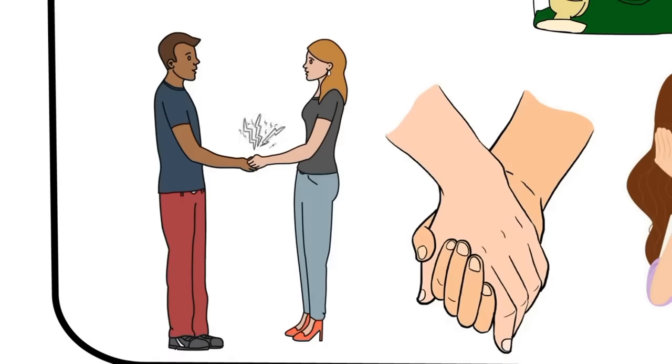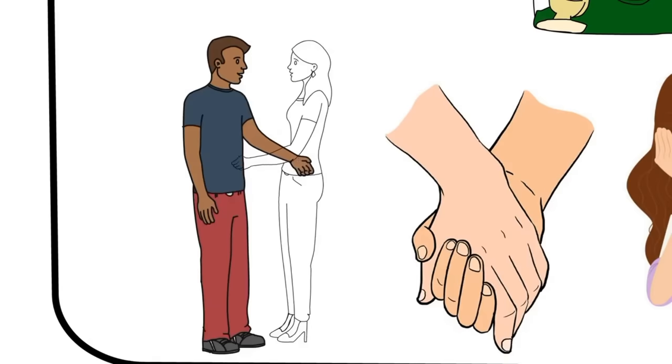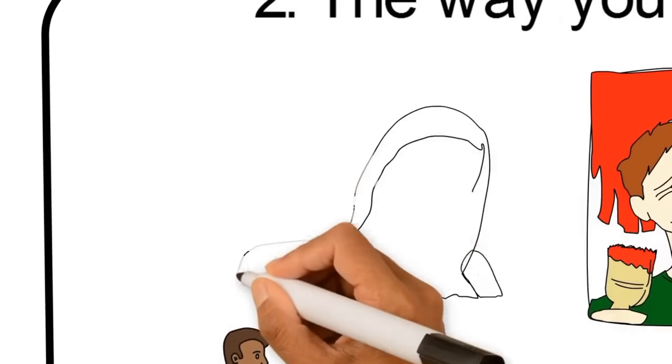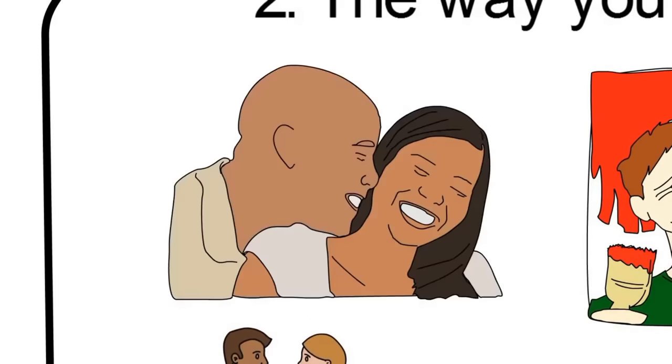You both respond to touch by leaning in or getting closer. When there's mutual attraction both of you will act on touch by leaning in and getting as close as possible. That ups the intimacy and takes your connection to another level.